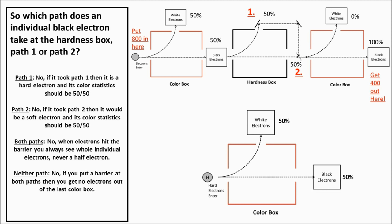At this point, let's ask a simple question: at the hardness box, which path does an individual electron take — path one or path two? If it took path one, it was a hard electron, and its color statistics should be 50-50, but that's not what we find. If it took path two, it was a soft electron — again 50-50 should apply, but that's also not the case. What if it took both paths? We can test this by placing a barrier on path one or path two, and we never get half an electron hitting the barrier — always a whole individual electron. So we can't say it took both paths.